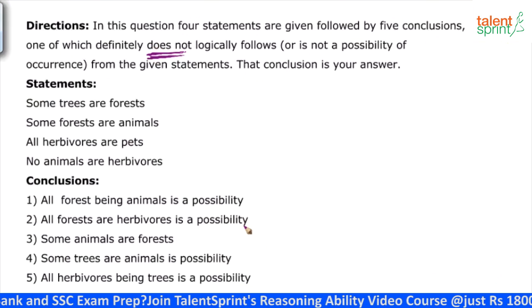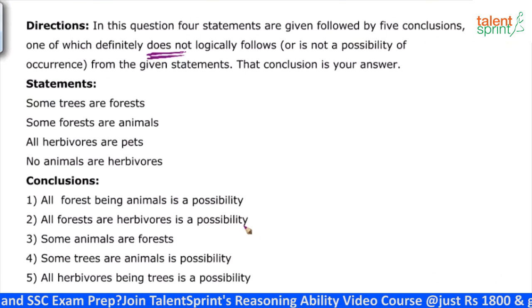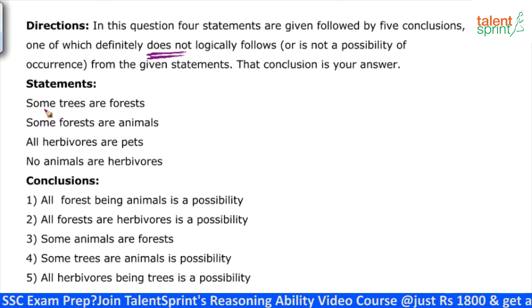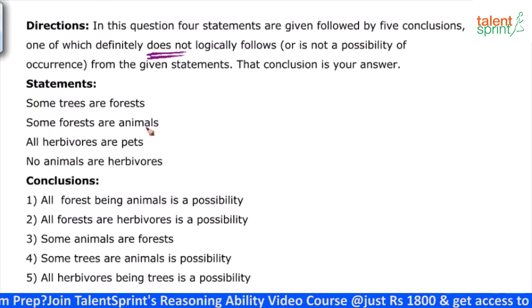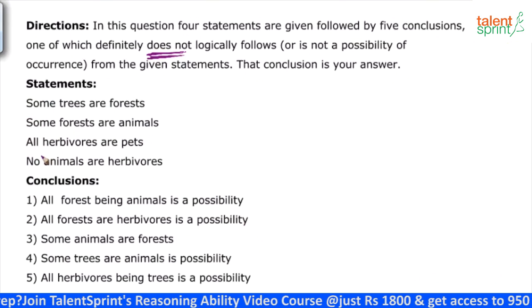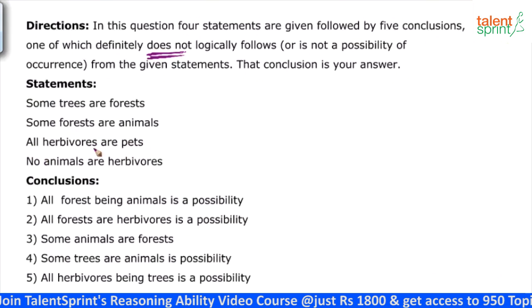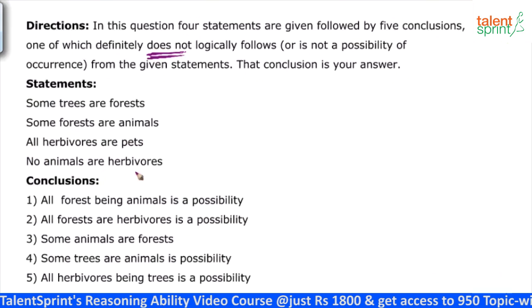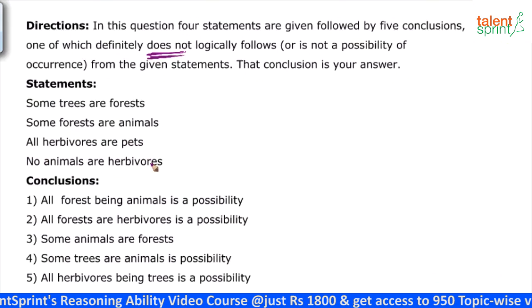There are four statements. Look at the statements: some trees are forests, some forests are animals, all herbivores are pets, no animals are herbivores.